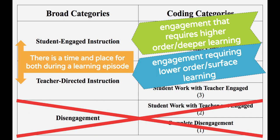Categories 1 and 2, where either the teacher or a majority of students are disengaged, is something we want to negate. However, in our data we saw that this is already at a minimum. So we want to really focus on categories 3, 4, 5, and 6 — higher-order and lower-order thinking.